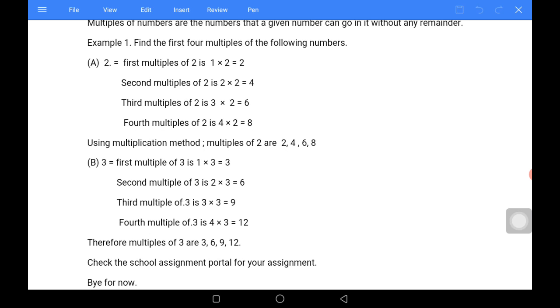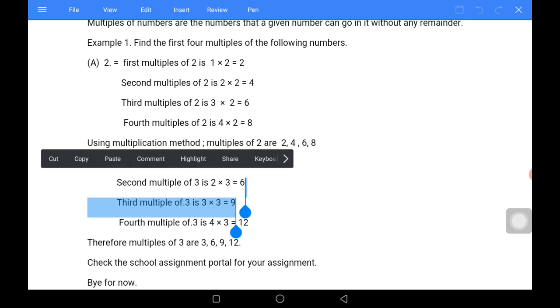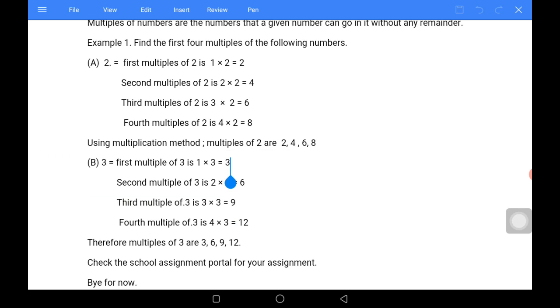First multiples of two is one times two which is equal to two. That is, if you multiply two by one, it will give you two. Second multiples of two is two times two which is equal to four. That is, two in two places. Third multiples of two is two times three which is equal to six. Fourth multiples of two is four times two which is equal to eight.